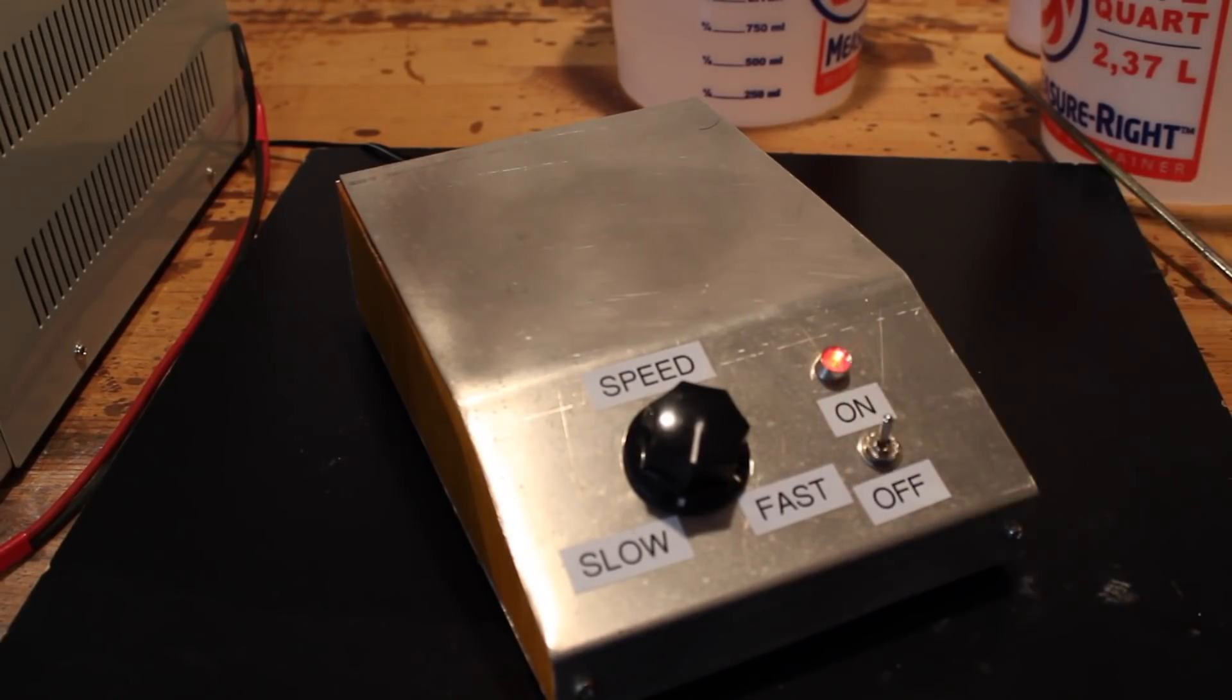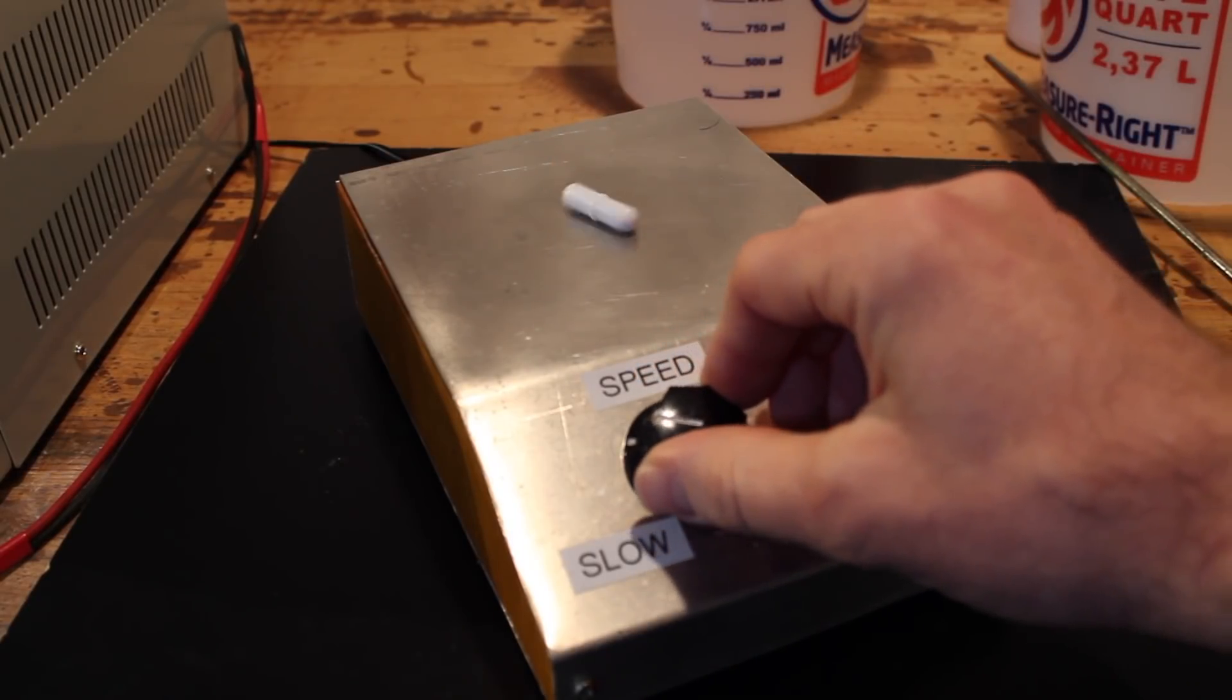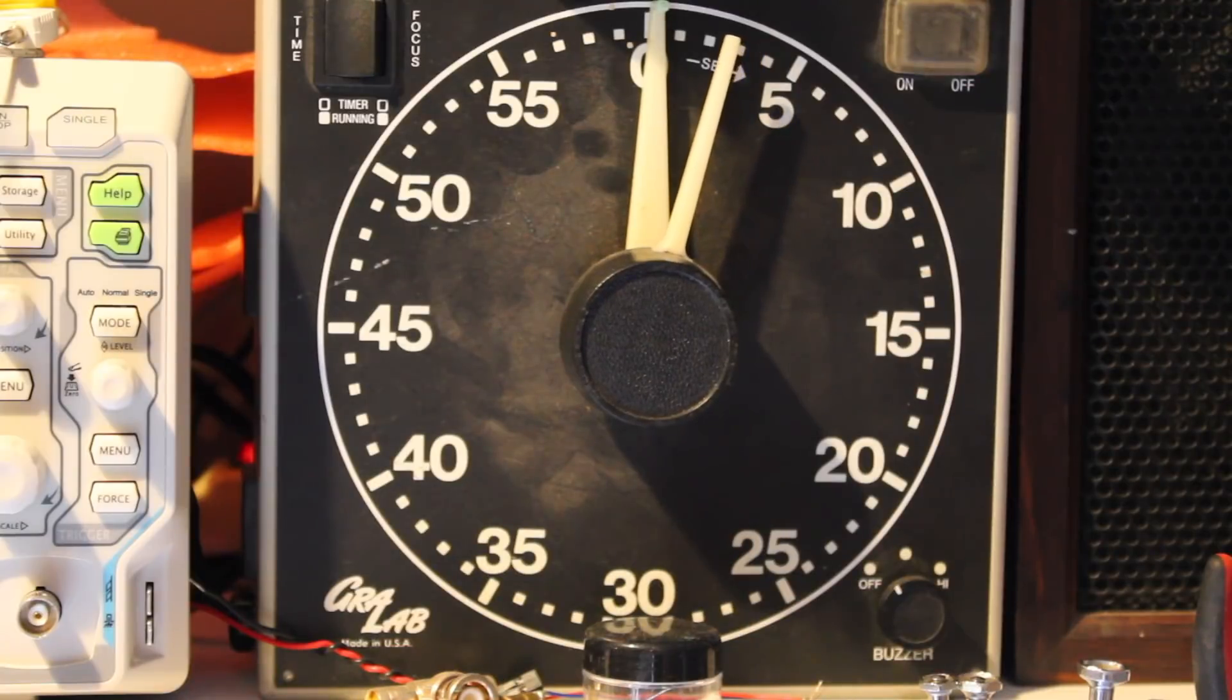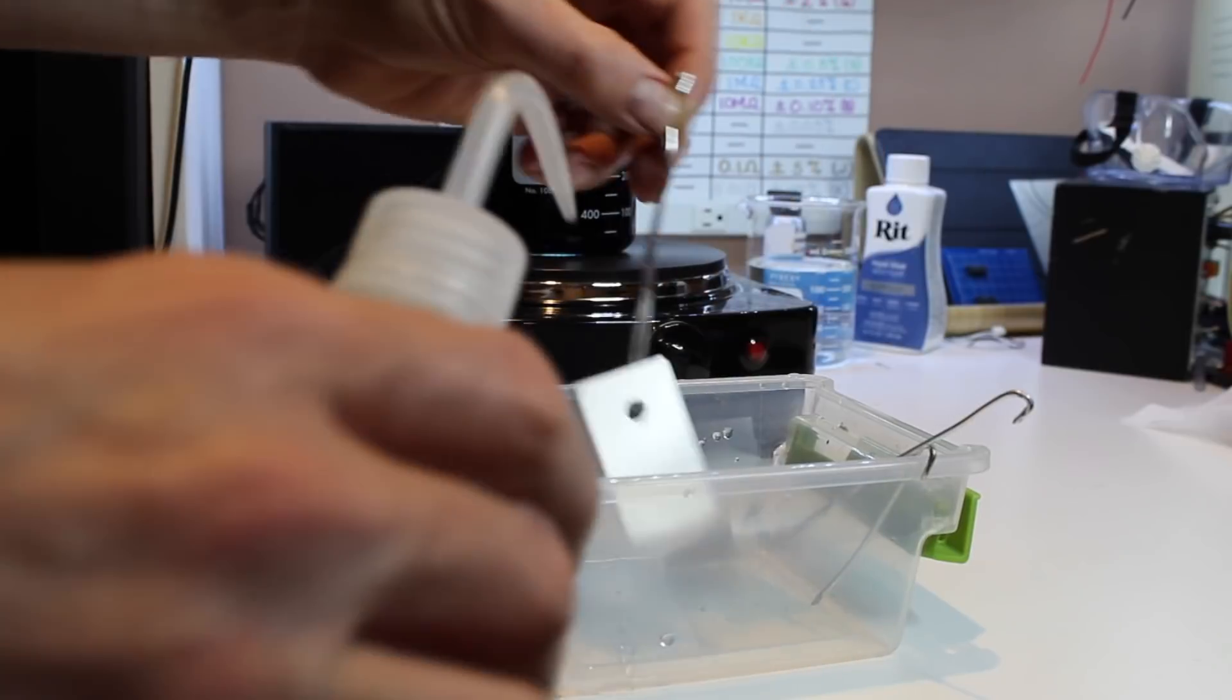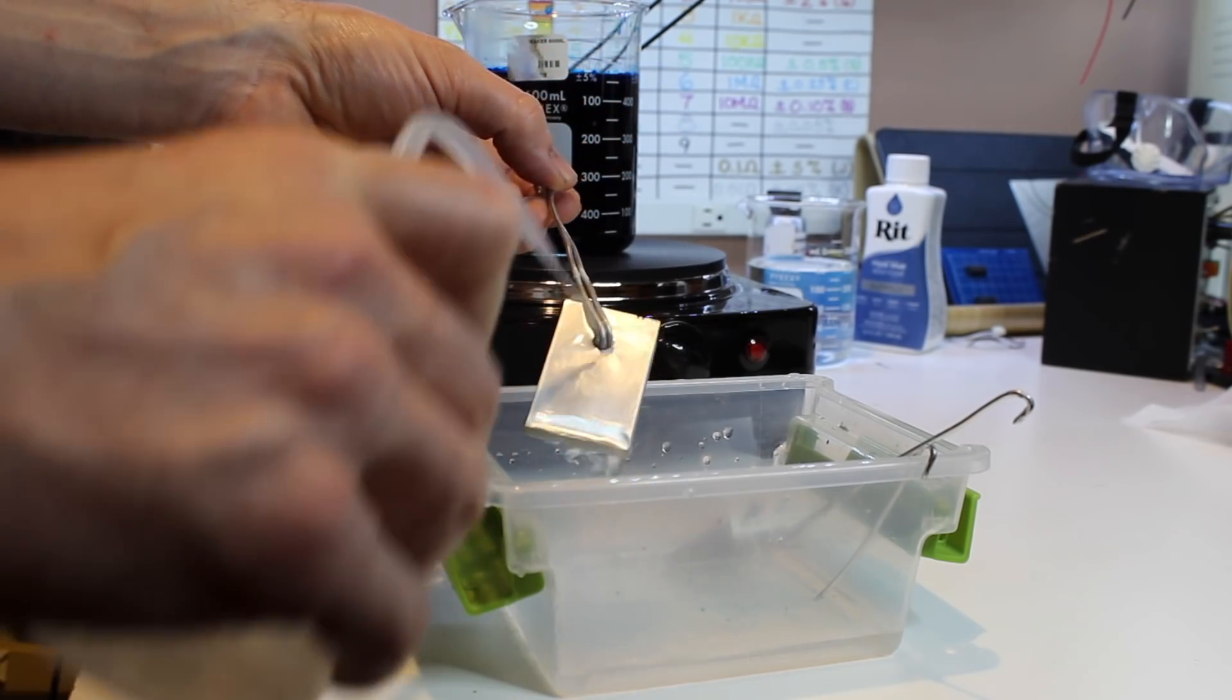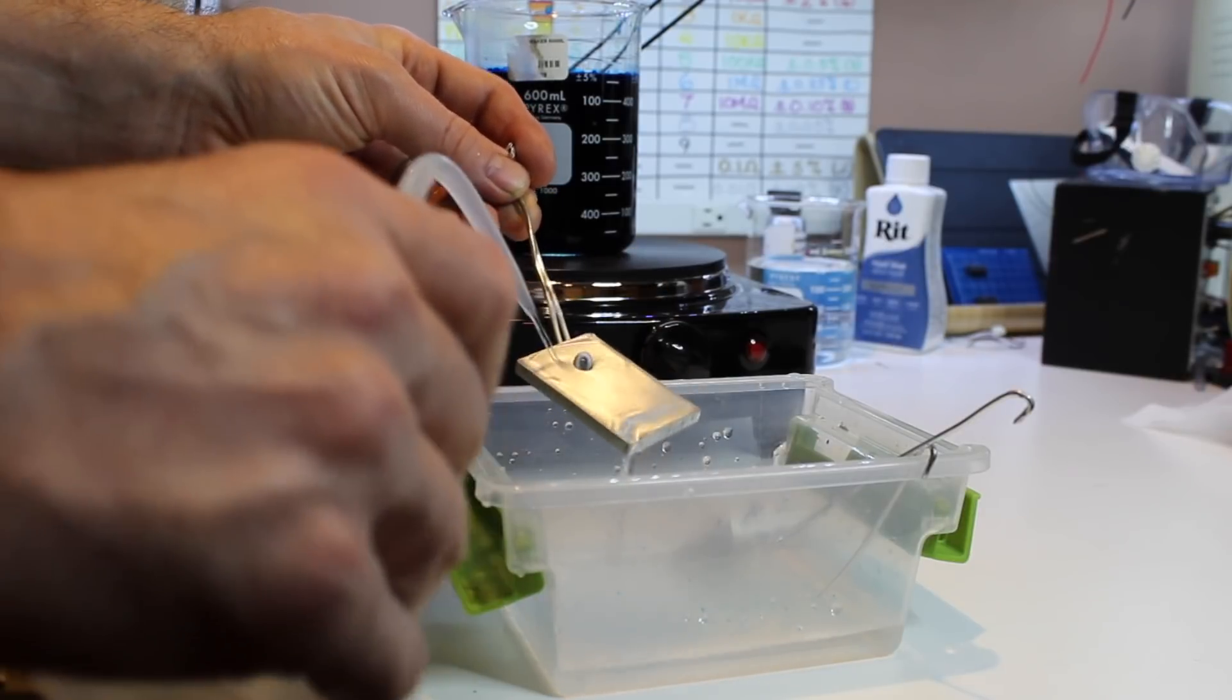To keep the anodizing bath agitated I'm using a magnetic stirrer that I made from an old computer fan and some neodymium magnets. With these sample pieces I found my best results came with setting one amp for one hour at about 20 volts. After your hour is up rinse your parts thoroughly so that they'll be ready for the dyeing process. The anodizing is done and if everything's worked you should have grown an oxidized layer of about one thousandth of an inch thick.